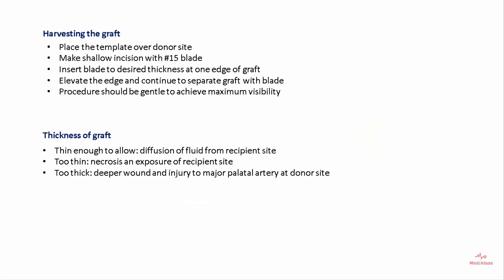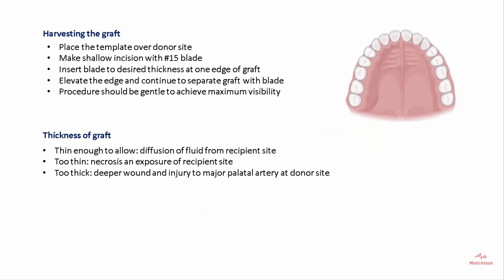To harvest the graft, place the template over the donor site and make a shallow incision with a number 15 blade. Insert the blade to the desired thickness at one edge of the graft, elevate the edge, and continue to separate the graft with the blade. This procedure should be performed gently to achieve maximum visibility.